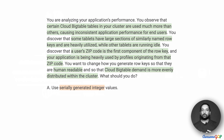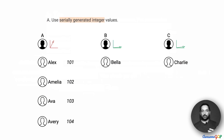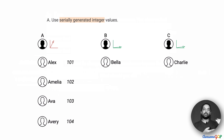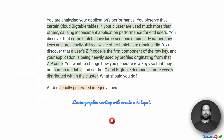Option A suggests that we use serially generated integer variables — numbers like 100, 203, etc. We have the same problem there: they are also sorted and are going to be close to each other, similar to the way that Alex, Amelia, and Avery are close to each other. Therefore, this does not resolve the hotspotting problem and we have to eliminate option A.